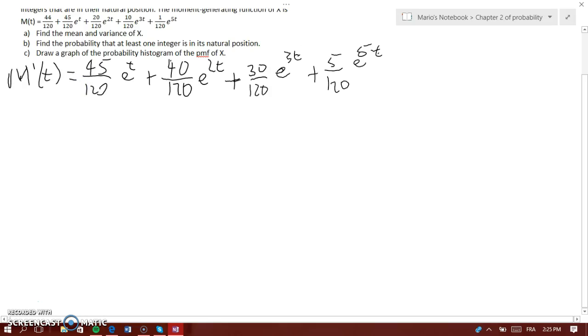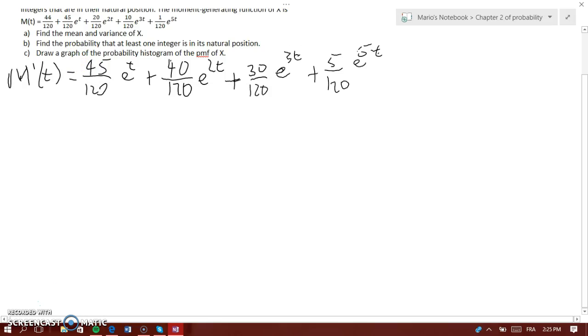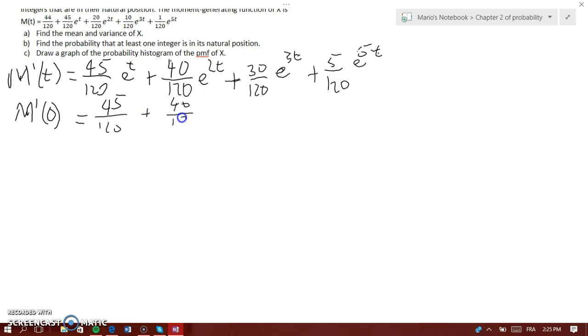Now we need to find the derivative at t equals 0. So M'(0) would be 45 over 120 plus 40 over 120 plus 30 over 120 plus 5 over 120. That would equal 1 because 45 plus 5 is 50, plus 30 is 80, plus 40 is 120, so that equals 1.